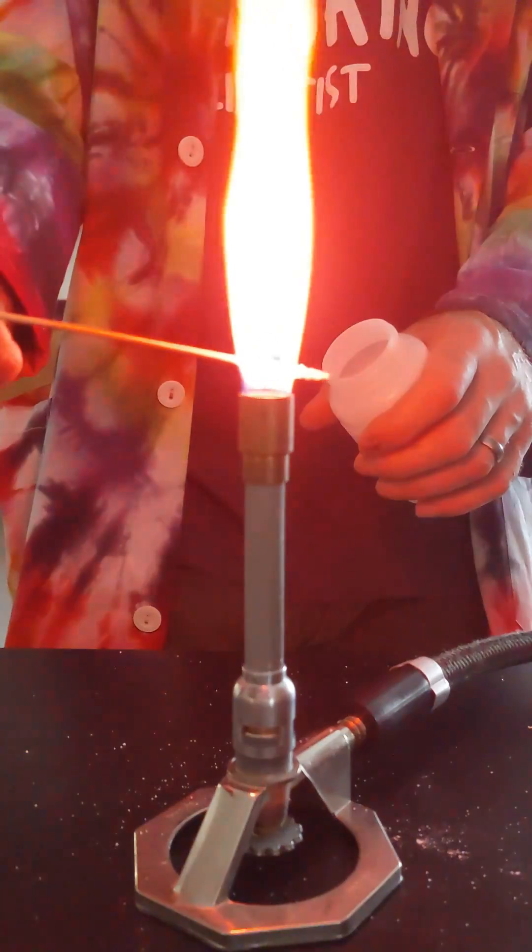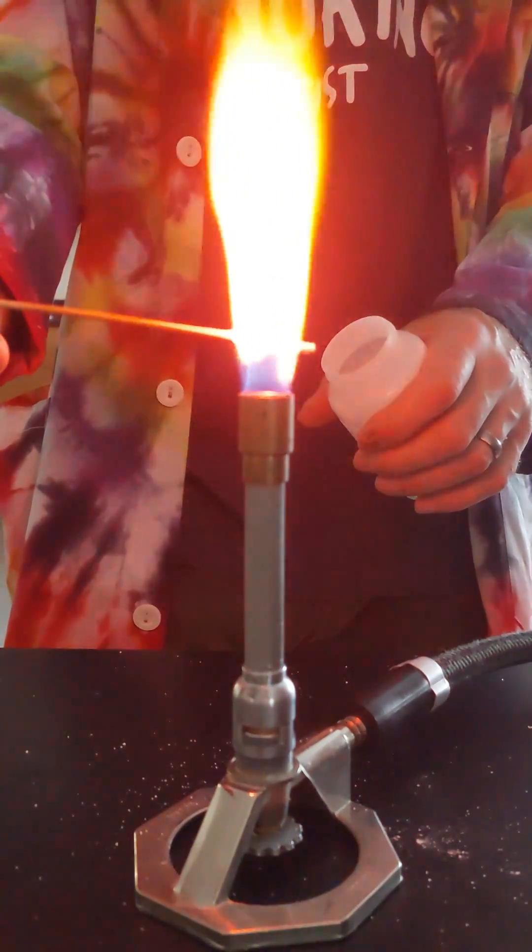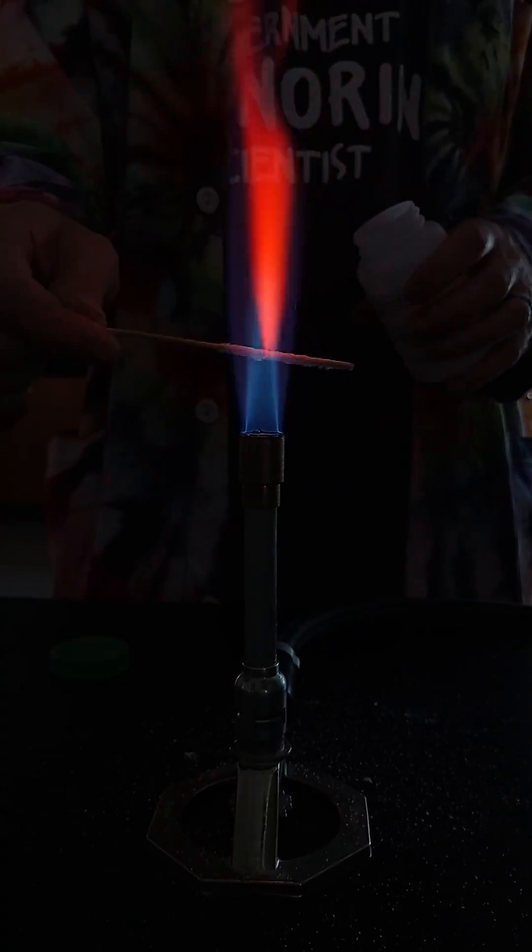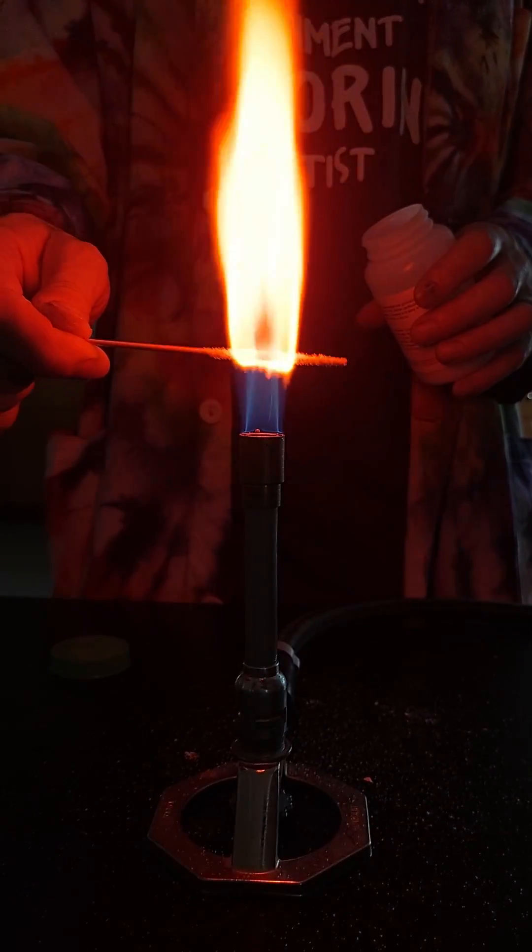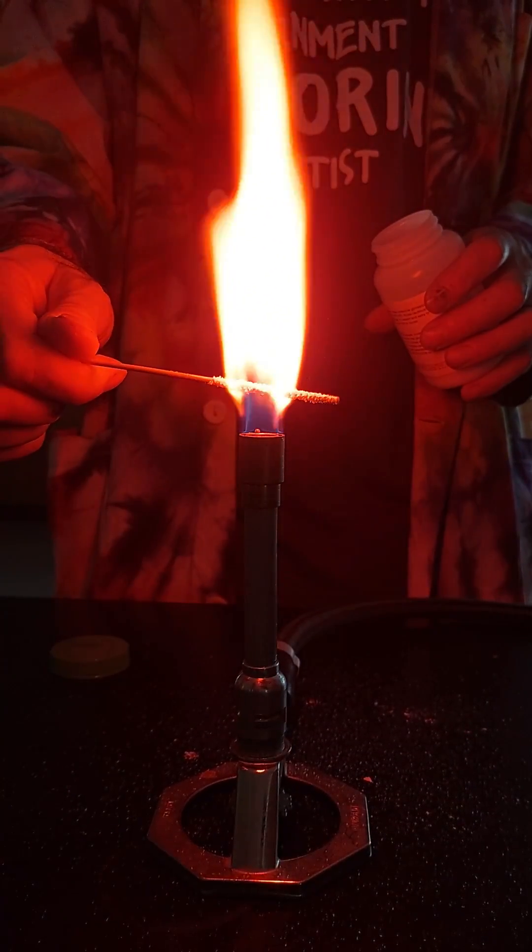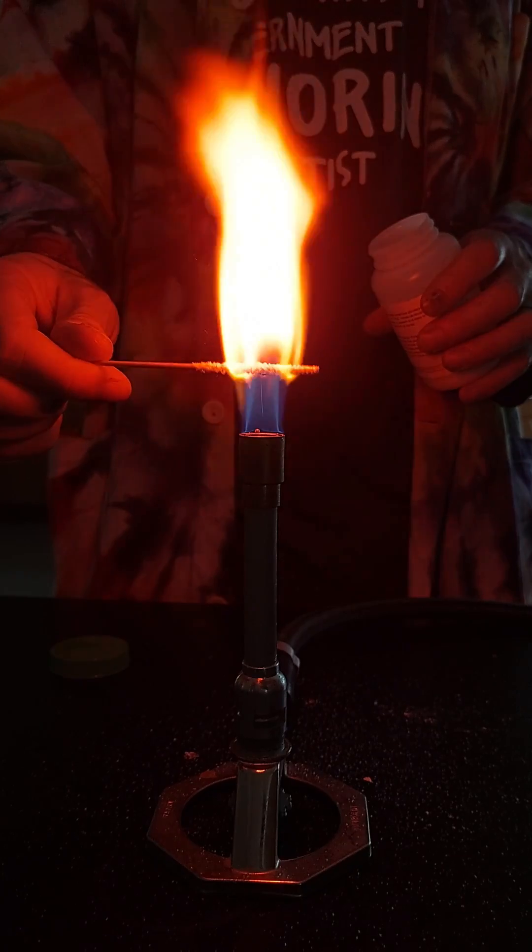Anyway, so the electrons in the metal ion, they're loosely held, so they can easily make these jumps, and when they fall back out of these unstable orbits, they emit that energy they absorbed as visible light at very specific wavelengths, which is why we see these characteristic colors.